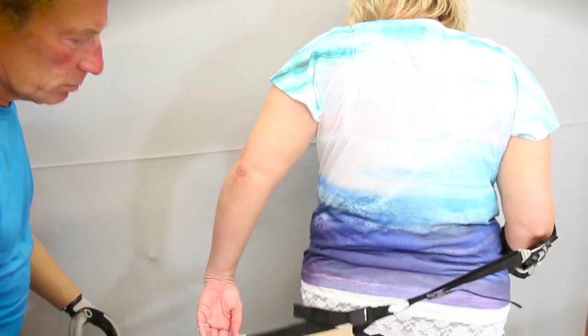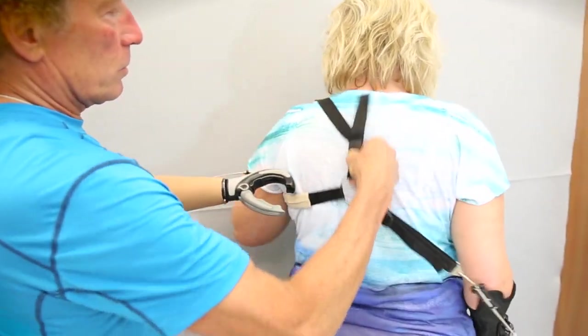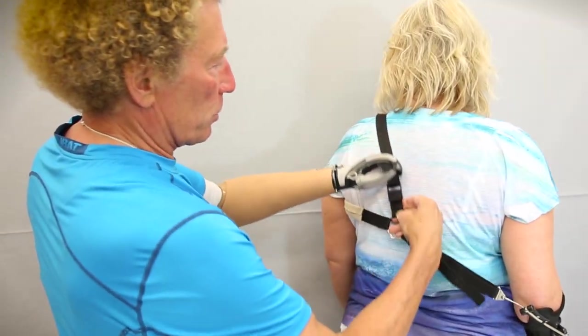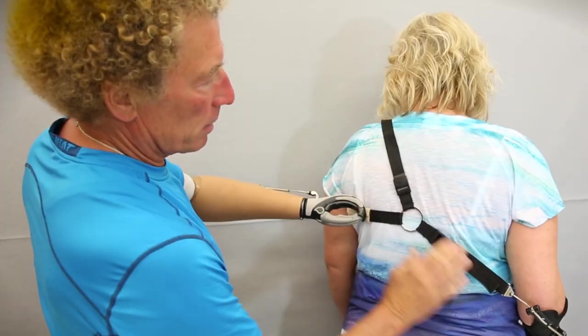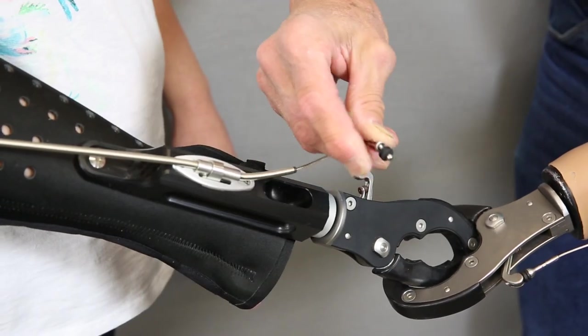The Figure 9 harness is fully adjustable. First, adjust the axilla loop around the user's contralateral shoulder so that it completely and comfortably encompasses the shoulder and the harness ring sits on or slightly off the vertebra towards the contralateral side. Attach the cable fitting into the terminal device.